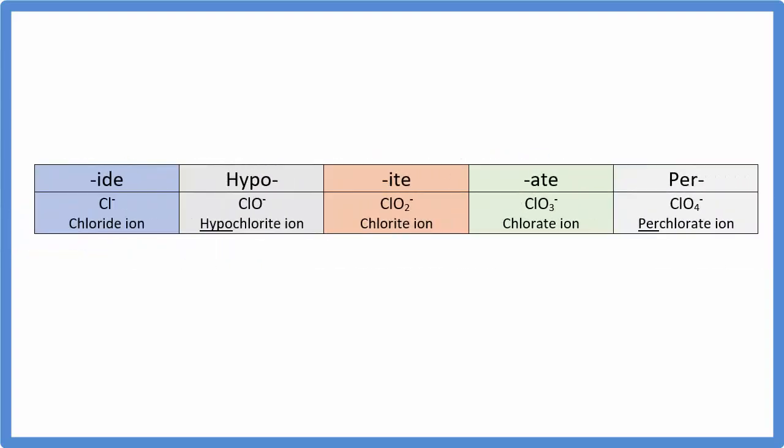So finally, we can use the prefixes hypo and per when we write the names for common polyatomic ions. Hypo means one less oxygen than the compound that ends in ITE. So if I have ClO2-, and I have one less oxygen, I get ClO-, and that's called hypochlorite ion.